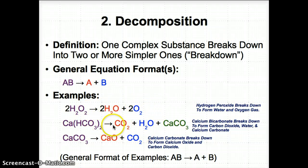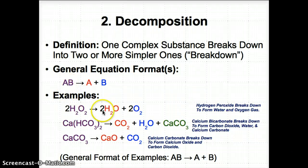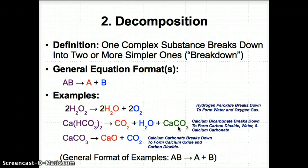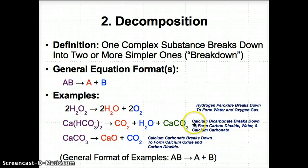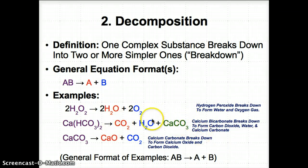Same idea here, also following AB → A + B, but now with another substance. We have the complex compound Ca(HCO3)2 (AB) breaking down to form CO2 (A), H2O (B), and CaCO3 (C). So Ca(HCO3)2 breaks down into CO2 + H2O + CaCO3 — calcium bicarbonate breaking down to form carbon dioxide, water, and calcium carbonate, all three of which are much simpler than the original complex compound.